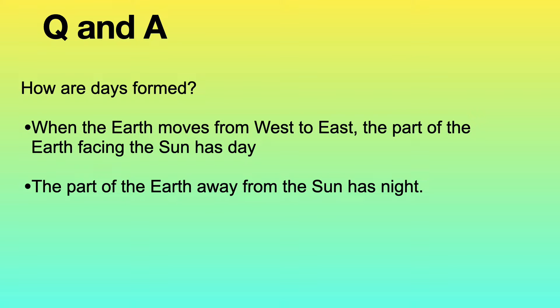How are days formed? When the Earth moves from west to east, the part of the Earth facing the Sun has day. The part of the Earth away from the Sun has night.